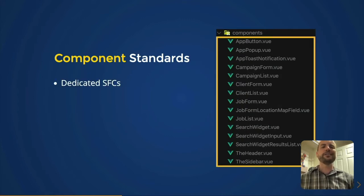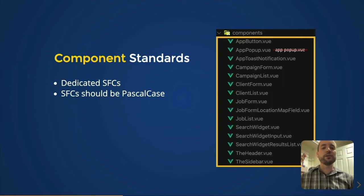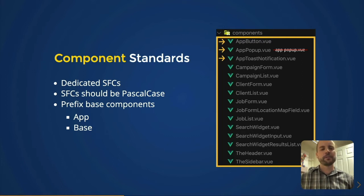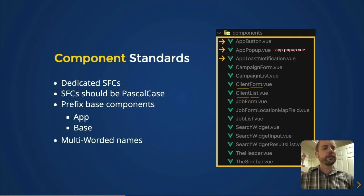The first one is that we should use dedicated single-file components. Your single-file components should be named in PascalCase. Your base components should be prefixed with either 'App' or 'Base' — this groups them together in the file structure and lets people immediately know it's an app-wide reusable component. I personally prefer 'App' because it starts with an A and typically groups all of those at the very top of the components directory. Also, use multi-worded names for your components — this prevents clashing with future or existing HTML elements, which are always a single word.